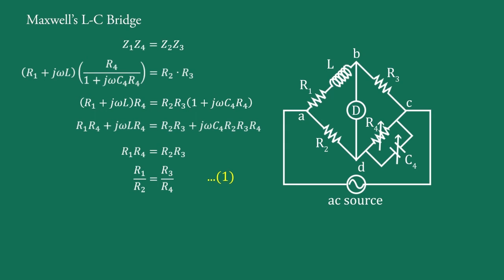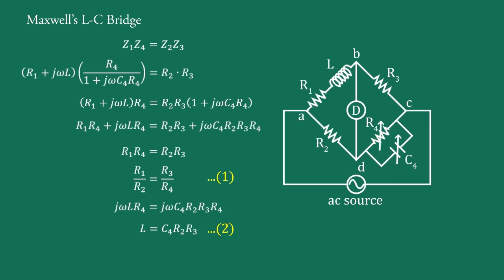Equating the imaginary parts of the equation, we get jω·L·R4 equals jω·C4·R2·R3·R4. Cancelling jω·R4 from both sides, we get L equals C4·R2·R3. This is equation 2.